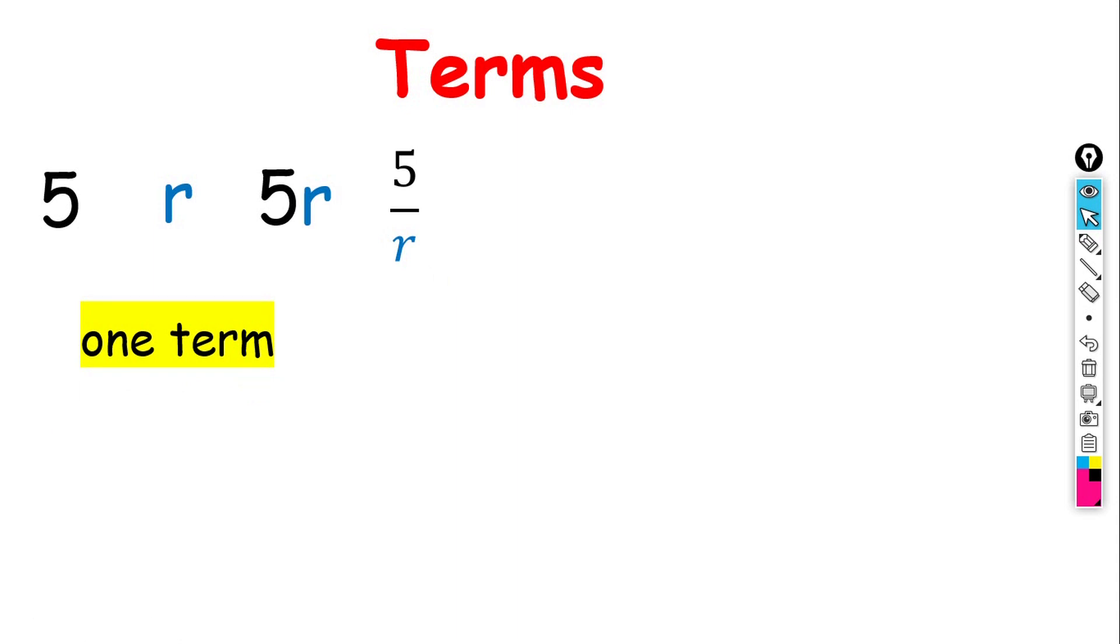So in conclusion, we can say that when 2 single terms, 5 and r, multiply together or divided, it remains a single term. Or we call it 1 term.